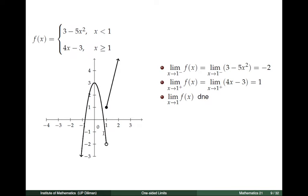So x is less than 1, and the definition of f is given by the parabola 3 minus 5x squared. In computing the limit of f(x) as x tends to 1 minus, we have the limit of 3 minus 5x squared as x tends to 1 from the left. Graphically, we see that the functional values are approaching negative 2. We can also obtain this by plugging in 1: 3 minus 5 times 1 squared equals negative 2.